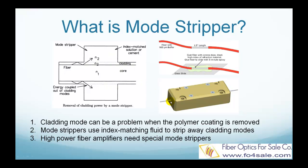In a high-power fiber amplifier made from double clad fiber, residual pump light may have to be removed in order to prevent it either from traveling along with the amplified signal or from getting back to the signal source. A special cladding mode stripper is usually used for that purpose. Cladding mode strippers for use in high-power fiber amplifiers need to be able to handle substantial optical powers. These powers must be absorbed in a long enough region so that the generated heat can be removed safely without damaging the mode stripper or any other parts.